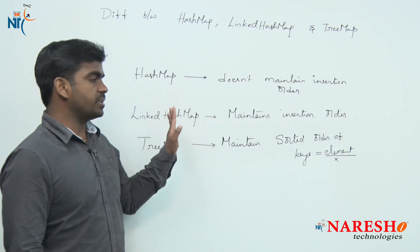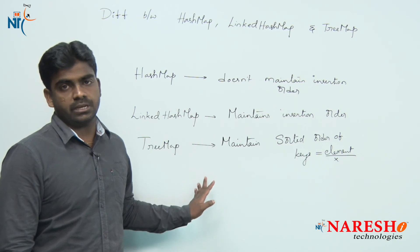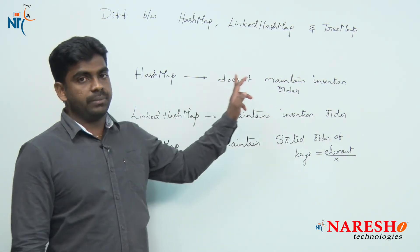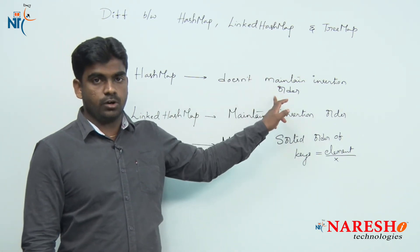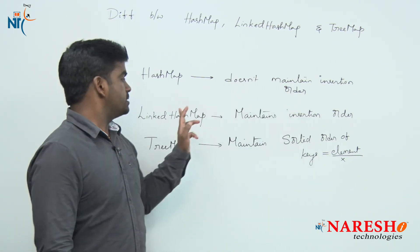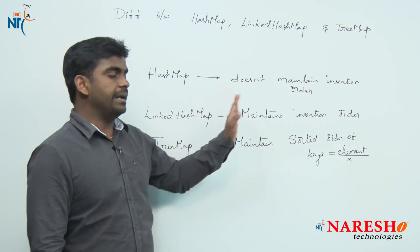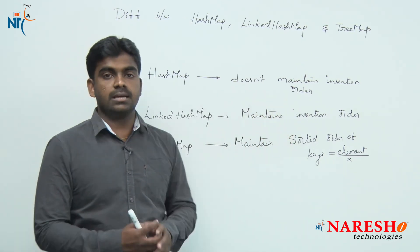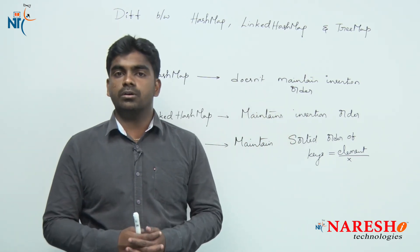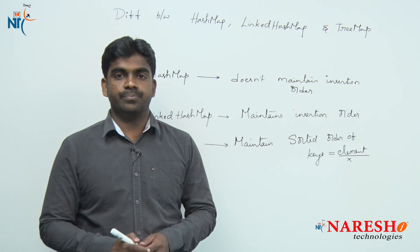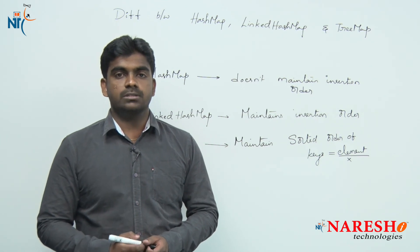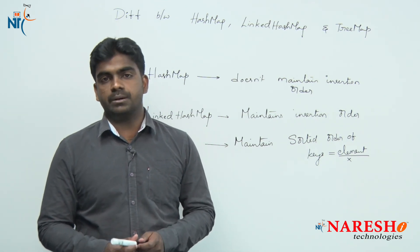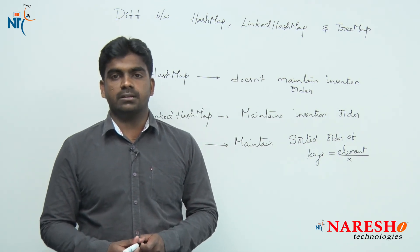This is the main difference between HashMap, LinkedHashMap, and TreeMap. One does not maintain insertion order, the second one maintains insertion order, and the last one maintains ascending order of keys. Hope you understood. For more videos please subscribe to NARESH IT channel. Thank you.